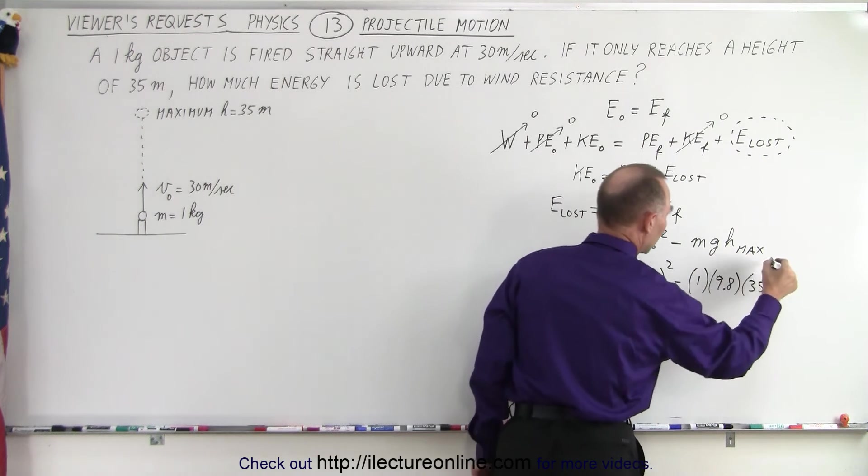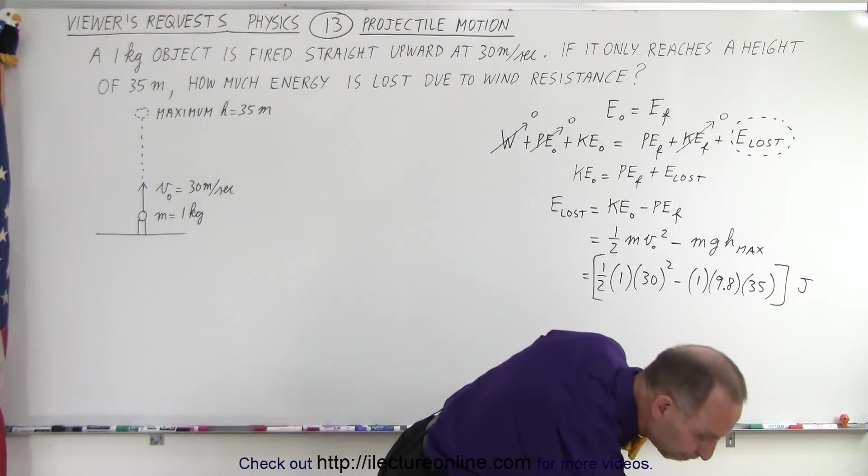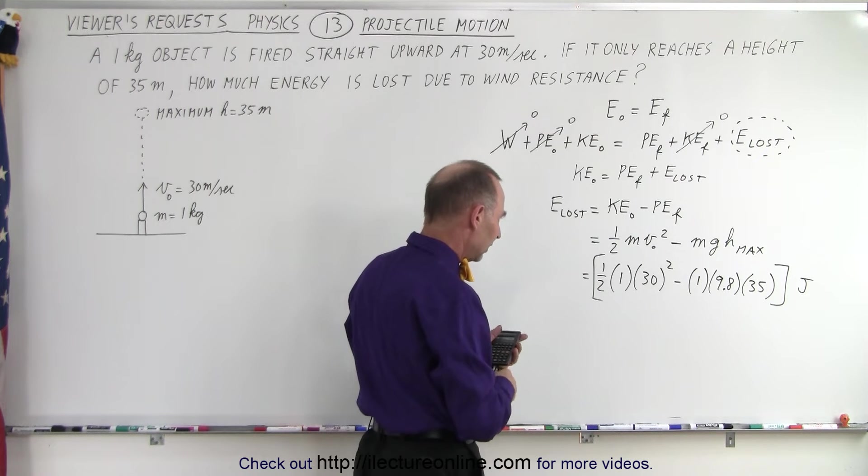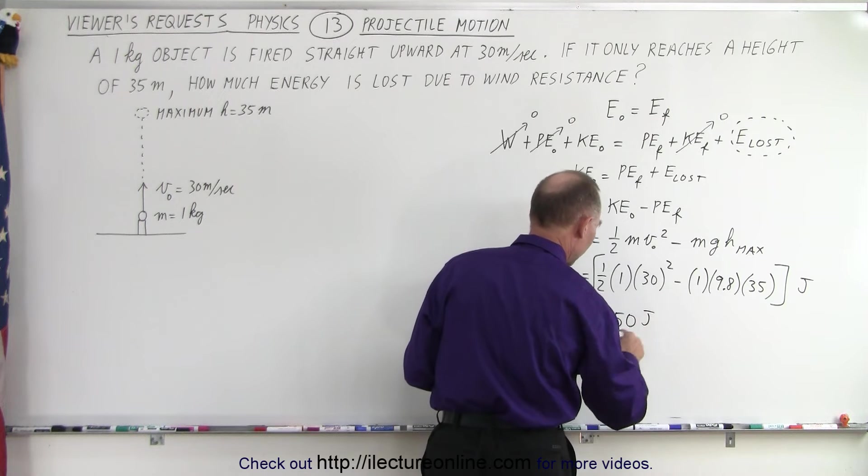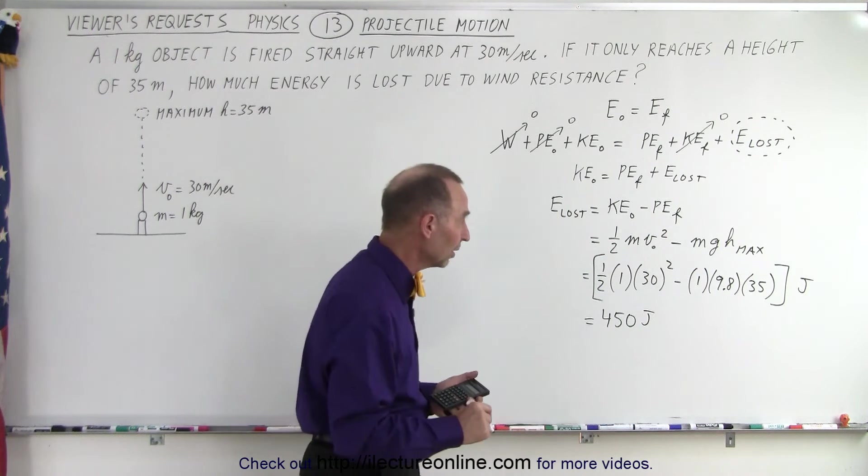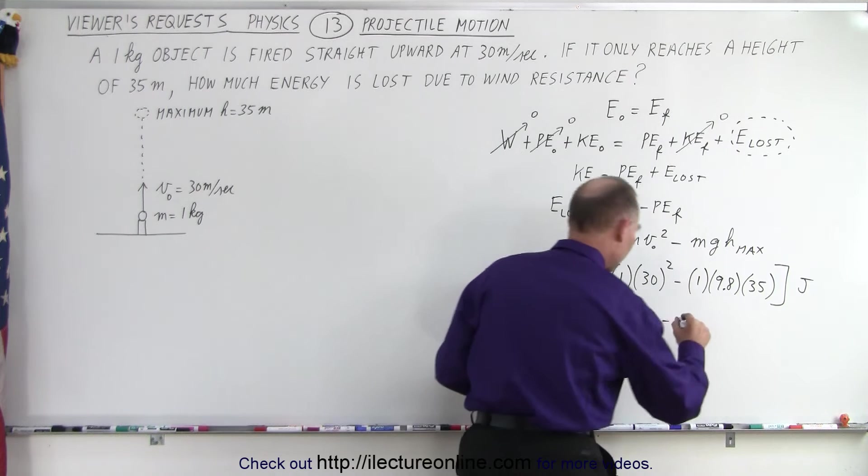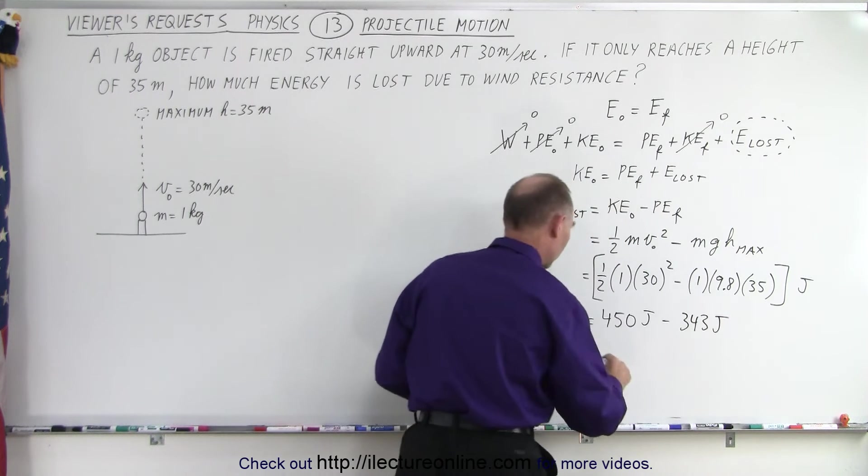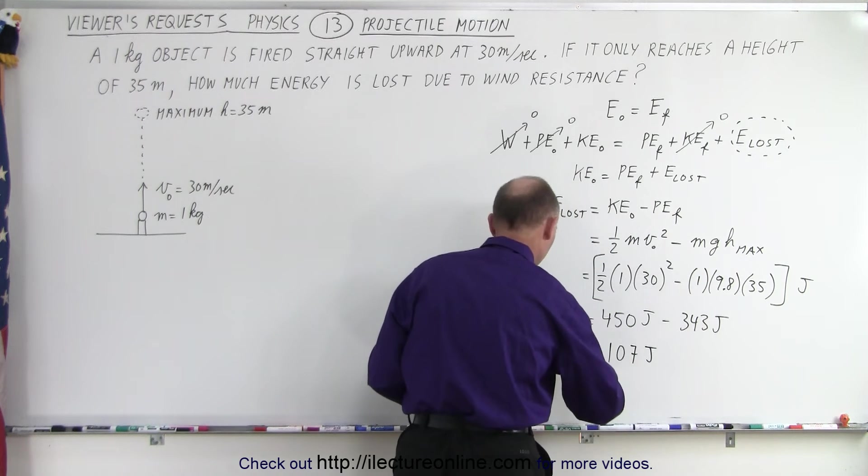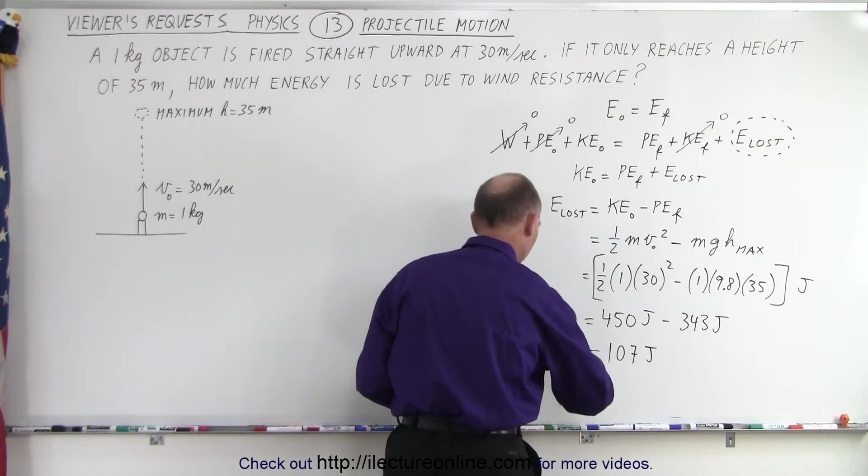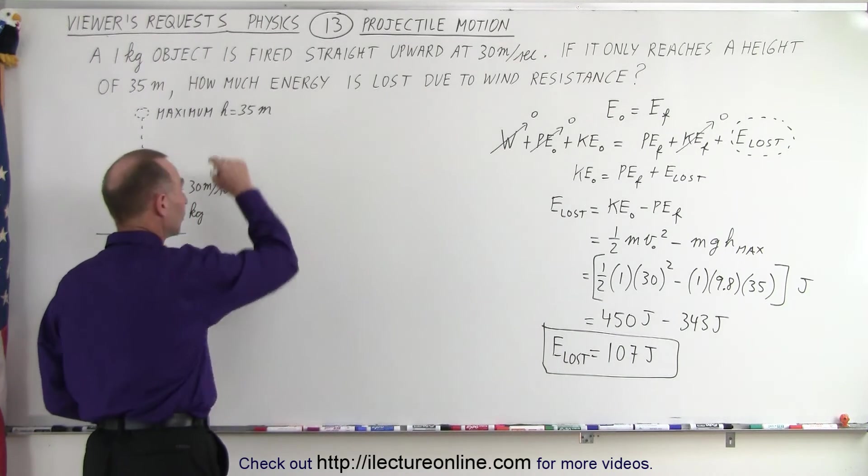And of course, the units for that will be joules, because units of energy is joules. All right, let's work that out and see what we get. So we end up with, well, let's see here, that's 900 divided by 2, which is equal to 450 joules. So we start out with 450 joules of kinetic energy. We subtract from that 9.8 times 35, which is 343 joules. So the difference, 450 minus 343, which would be 107 joules of energy lost. So the wind resistance will have removed 107 joules in the flight path from the bottom to its maximum height.